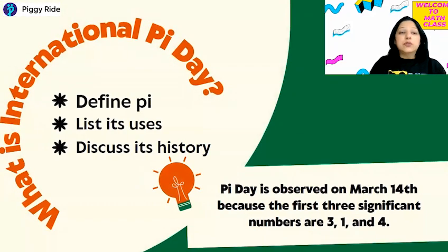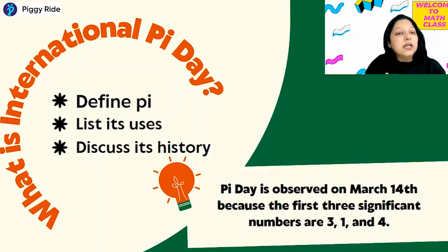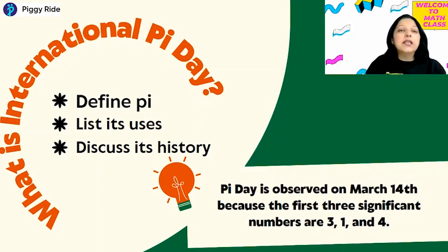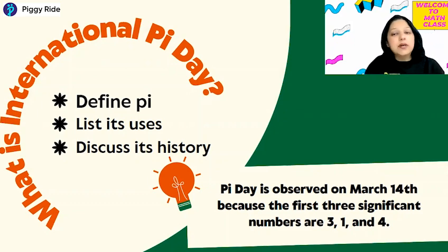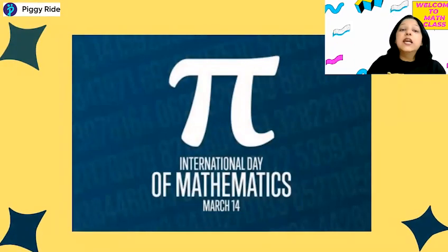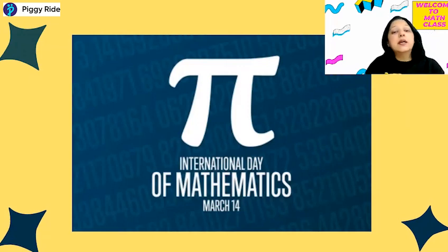Pi Day is observed on March 14. Why March 14? Because March is the third month of the year, and the value of pi is approximately 3.14 — so you can connect the date with the number. Pi Day is observed on March 14 because the first three significant digits are 3, 1, and 4. It is also called International Day of Mathematics, and all over the world on March 14 we celebrate Pi Day.